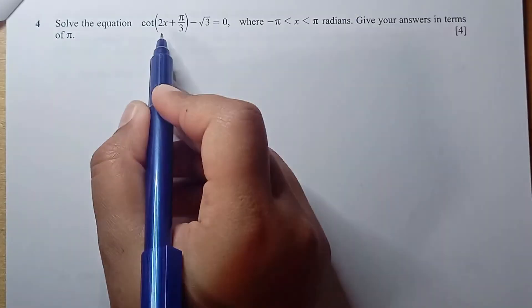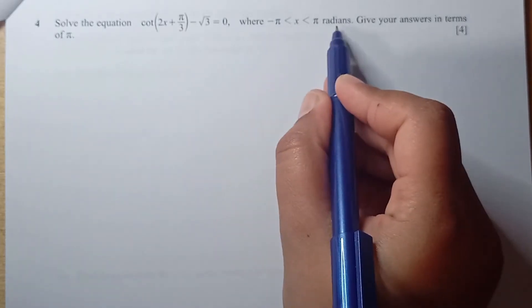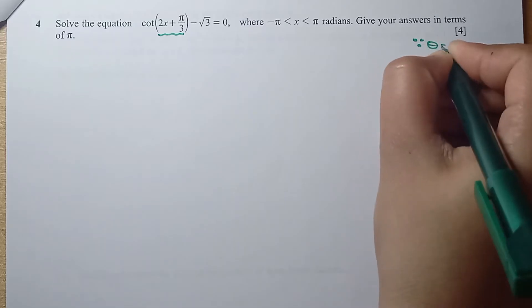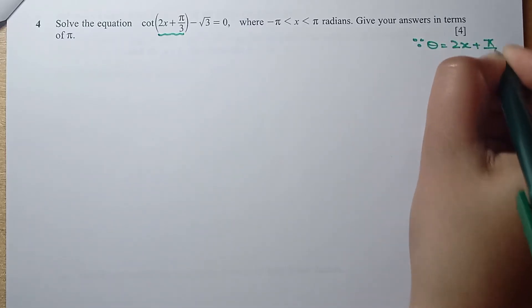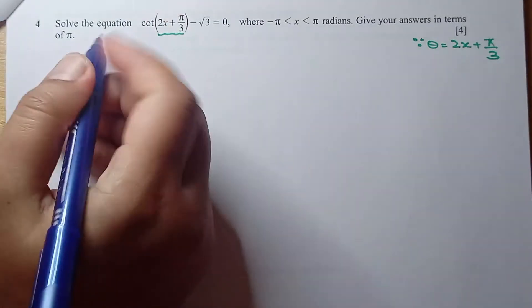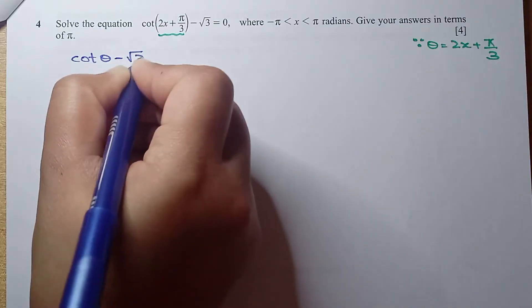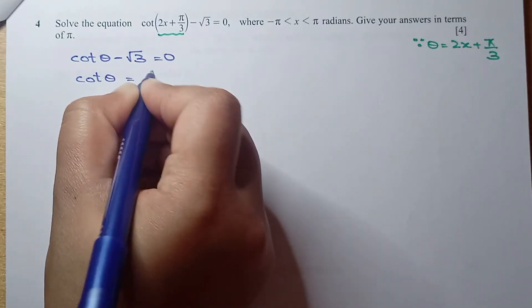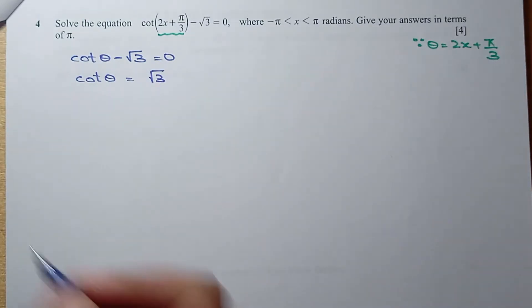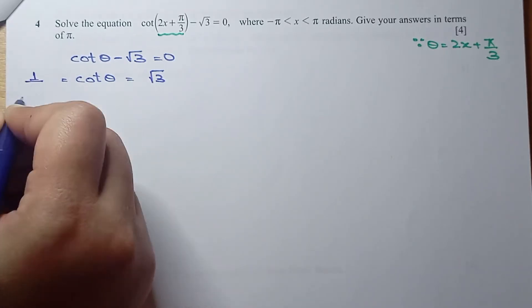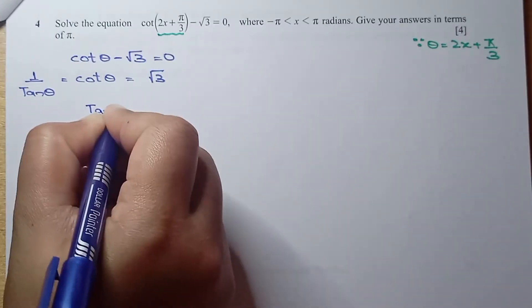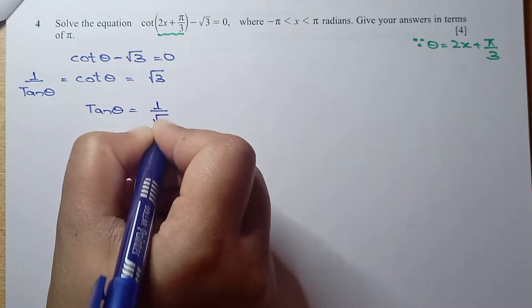Question number 4: solve the equation where x is between minus pi and plus pi, giving your answer in terms of pi. Let theta equal 2x plus pi/3. So cot theta minus root 3 equals 0, meaning cot theta equals root 3. Since cot is the reciprocal of tangent, tan theta equals 1 over root 3. So theta equals tan inverse of 1 over root 3.